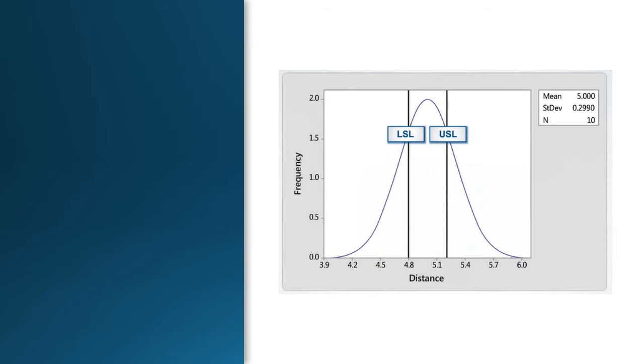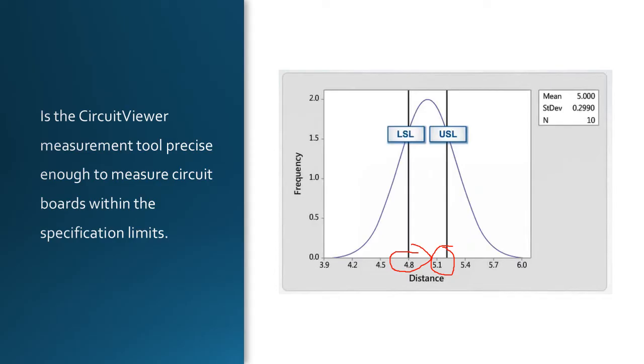So, let's get back to our PCB Pro example. Suppose we require that the distance between components on a circuit board be between 4.8 and 5.2 mm. Given the specification limits, is the PCBViewer measurement tool adequate? And we can see here, the answer is no. The PCBViewer measurement tool contributes too much variability to the measurements.